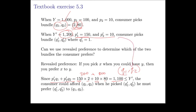Yet they chose not to. They chose to buy the bundle (q1', q2') rather than (q1, q2). That tells us they think (q1', q2') is a better bundle than (q1, q2). So yes, revealed preference does tell us that the consumer prefers (q1', q2') to (q1, q2).